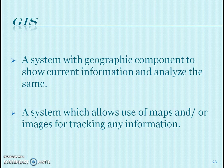What are these? GIS is a system which involves a geographic component to show current information and analyze the same. It is a system which allows use of maps and images for tracking any information which we require for conservation.